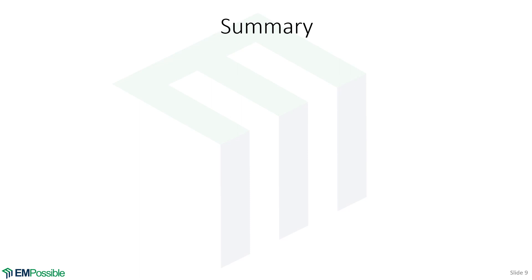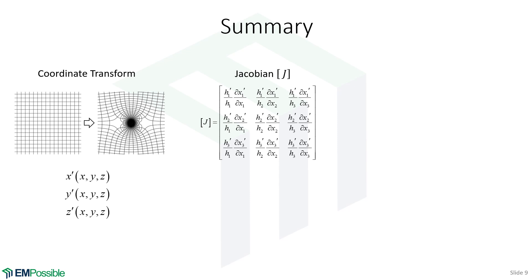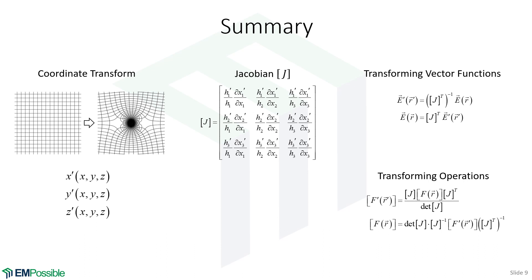Here's a summary. We started with a coordinate transform — which often is the hardest part: how do we come up with equations that do the transform in a way that's useful? We come away with three functions that calculate our transform coordinates from our original coordinates. Given those, we construct the Jacobian — the Jacobian is not used to transform our coordinates, we already have those equations; they're used to build the Jacobian. Then we use the Jacobian to transform our vector functions and our operations. In the context of Transformation Optics, those operations will be our permittivity and permeability. That's all we're covering for coordinate transforms — I really just want to hit the key points so you can apply this to Transformation Optics.